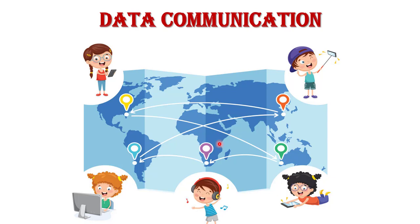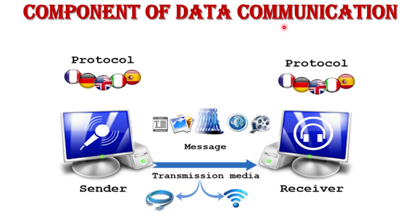Now, the components of data communication. A data communication system has five components: message, sender, receiver, transmission media, and protocols. What is a message? A message is the form of information which is to be communicated by the sender to the receiver. A message is any kind of information — text, audio, video — which is sent or communicated by the sender to the receiver.